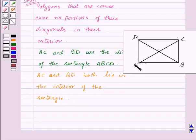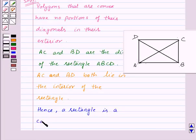The rectangle ABCD satisfies the property of convex polygons. Hence, a rectangle is a convex quadrilateral.